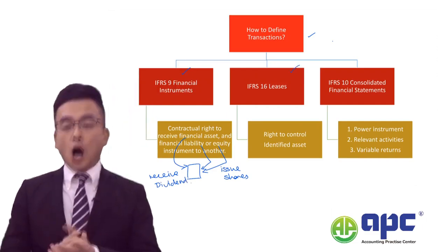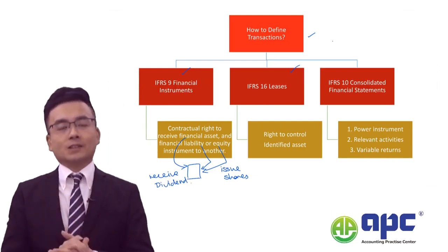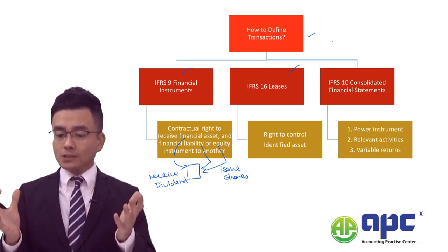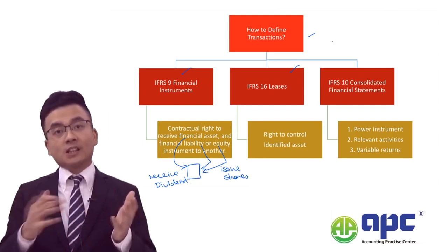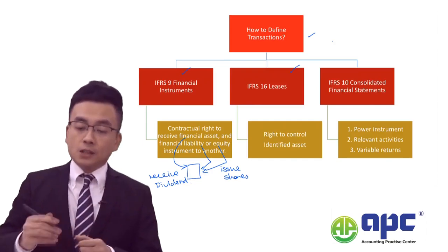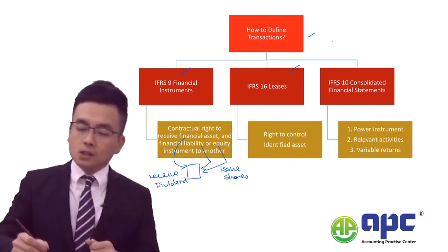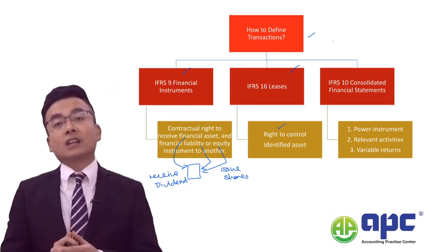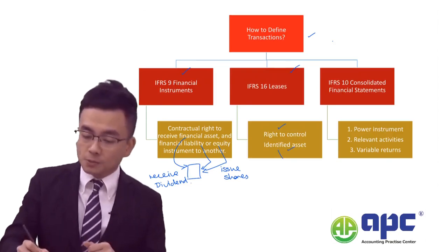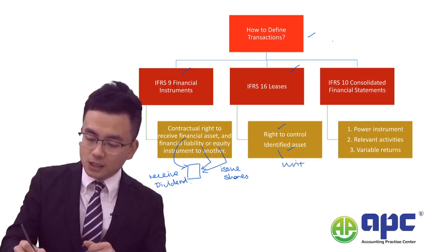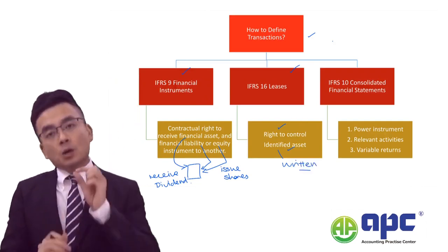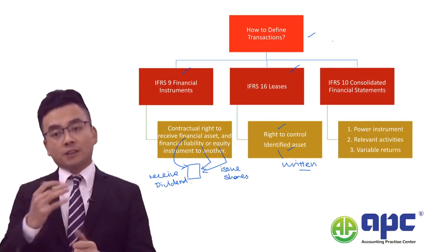The second standard is IFRS 16 leases. The definition is: instead of buying the asset, I'm going to be leasing the asset. To define a lease, we will need to have a right to control the identified asset, which means specifically written in the terms and conditions within a contract. We will see a particular example of how to define that later on.